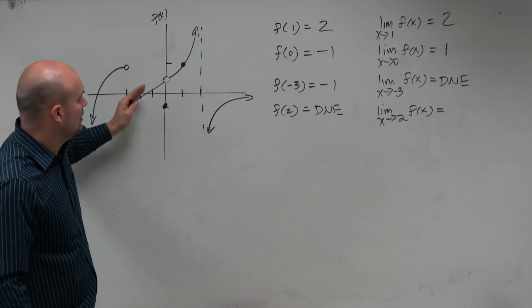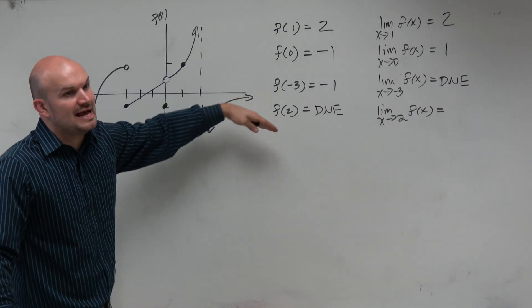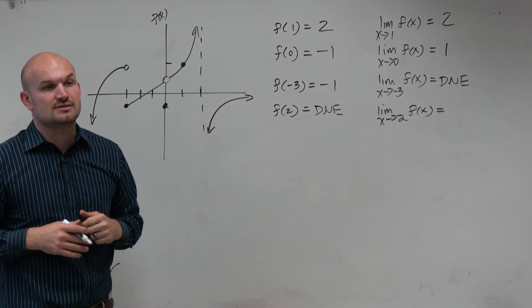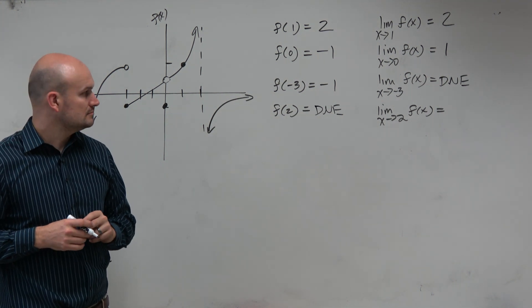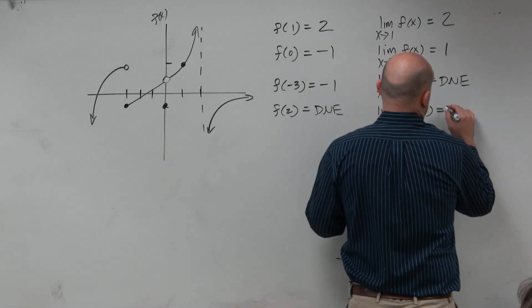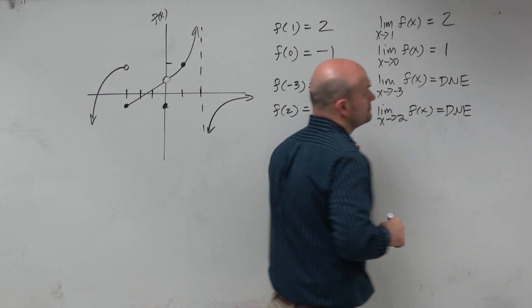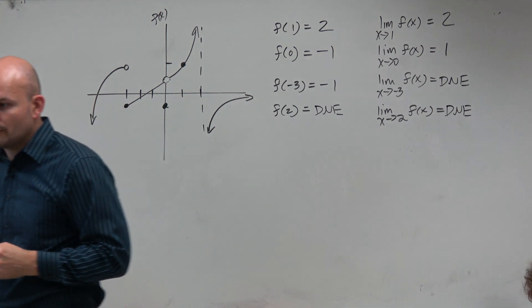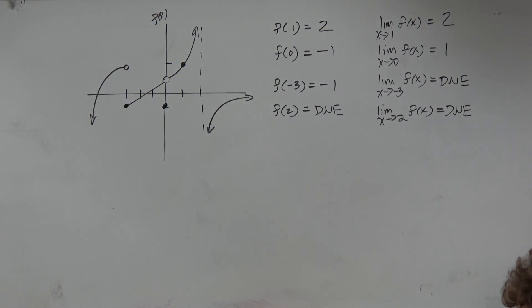And now we look at this and we say, oh, well, it's approaching positive infinity and negative infinity. It's going in two different directions. It's when it says f of 2. That's the value of the function. So again, that does not exist. So that is your basics for evaluating from a graph.